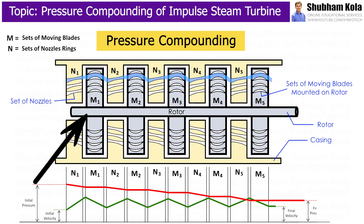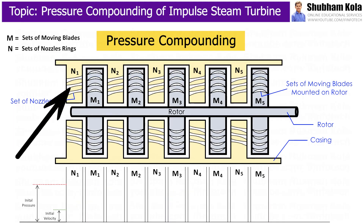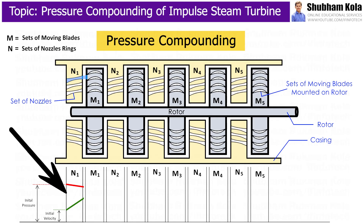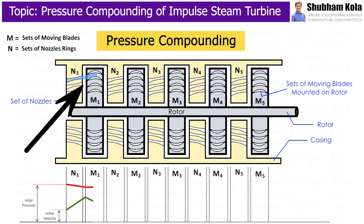During working of the pressure compounded steam turbine, high-pressure steam enters into the turbine. Here, steam gets partly expanded in the first set of nozzles, thus the pressure of steam decreases and velocity of steam increases. This high-velocity steam is then passed over the first set of moving blades M1, where the kinetic energy of steam is utilized to rotate the moving blades.